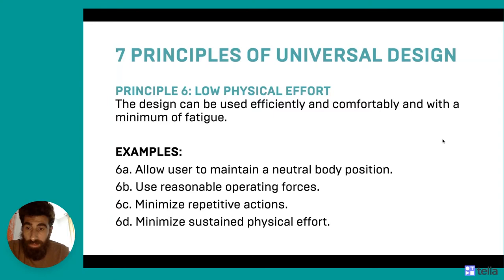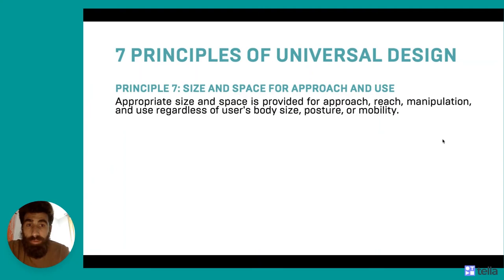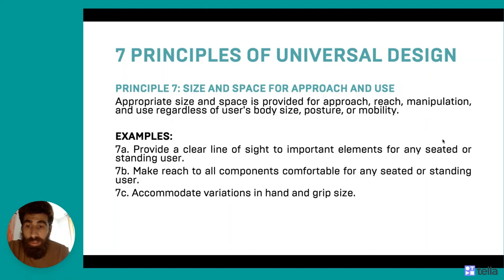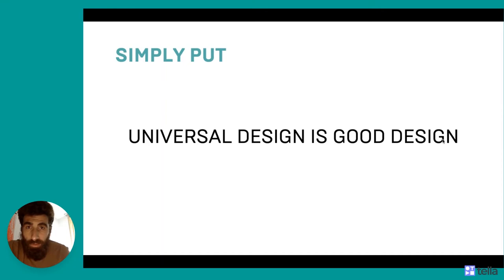The seventh and final principle is size and space for approach and use. Appropriate size and space is provided for approach, reach, manipulation, and use regardless of the user's body, posture, or mobility. Examples include: provide a clear line of sight to important elements for any seated or standing users, make reach to all components comfortable for any seated or standing users, accommodate variations in hand and grip size, and provide adequate space for the use of assistive devices or personal assistance. Simply put, universal design is good design, with all these principles laid in front of you.